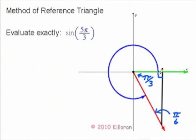If it's a 30, 60, 90 triangle, then the largest side is going to be 2. The smallest side is going to be 1.